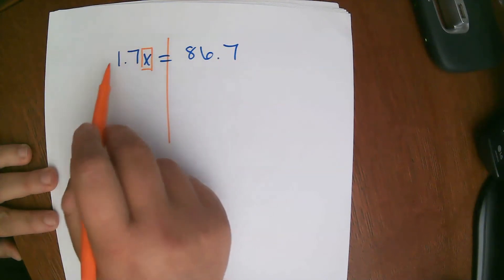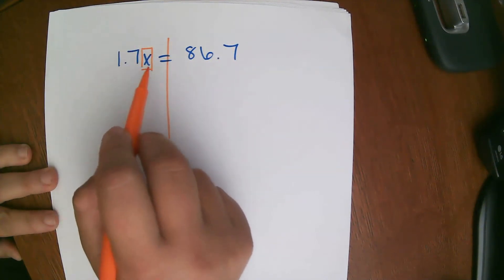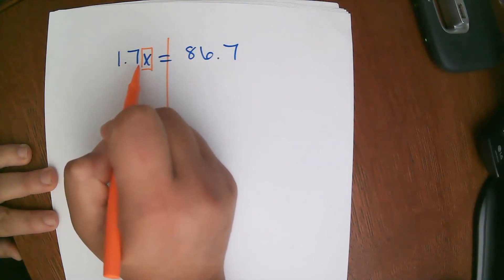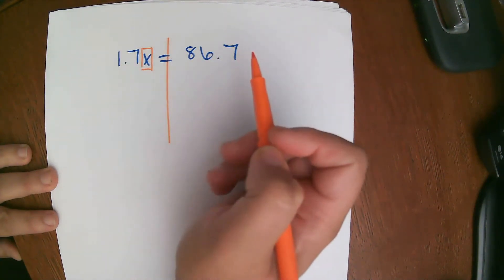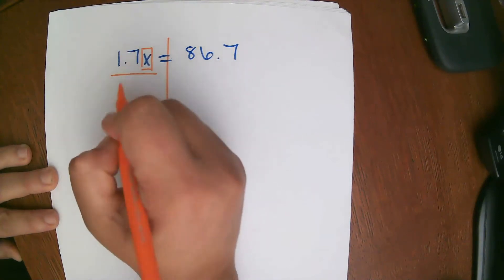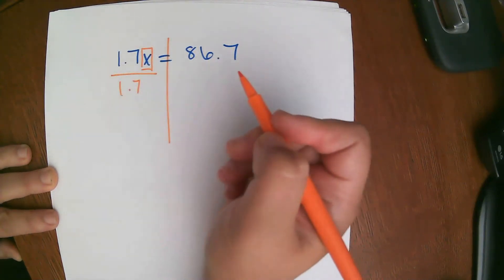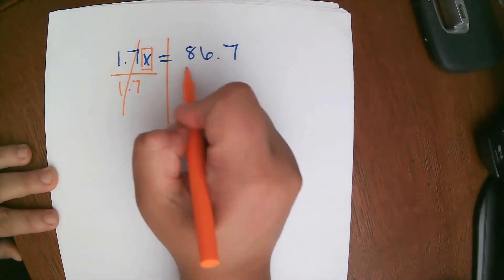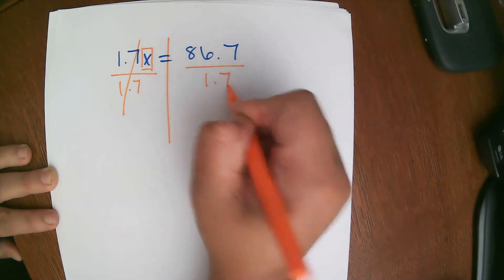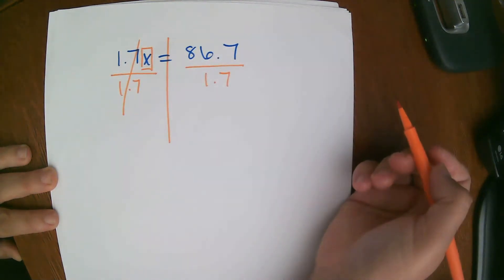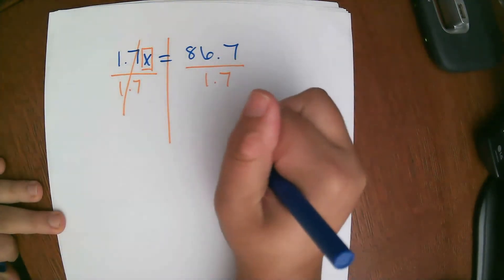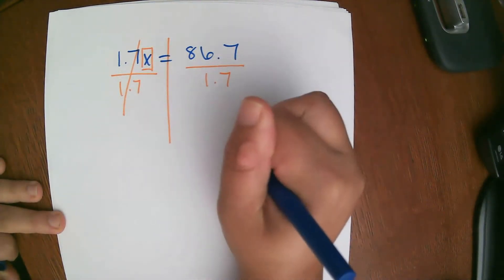So we need to isolate our variable. And how we do that is we take the inverse operation of what's going on over here. So we have 1.7 times x. So what's the inverse operation of times? Well, it's divide. So I'm going to divide by 1.7. These end up becoming 1. And whatever I do to one side of the wall, I have to do the other. So I'm going to also divide by 1.7. So now we have a division problem. So let's work it out.